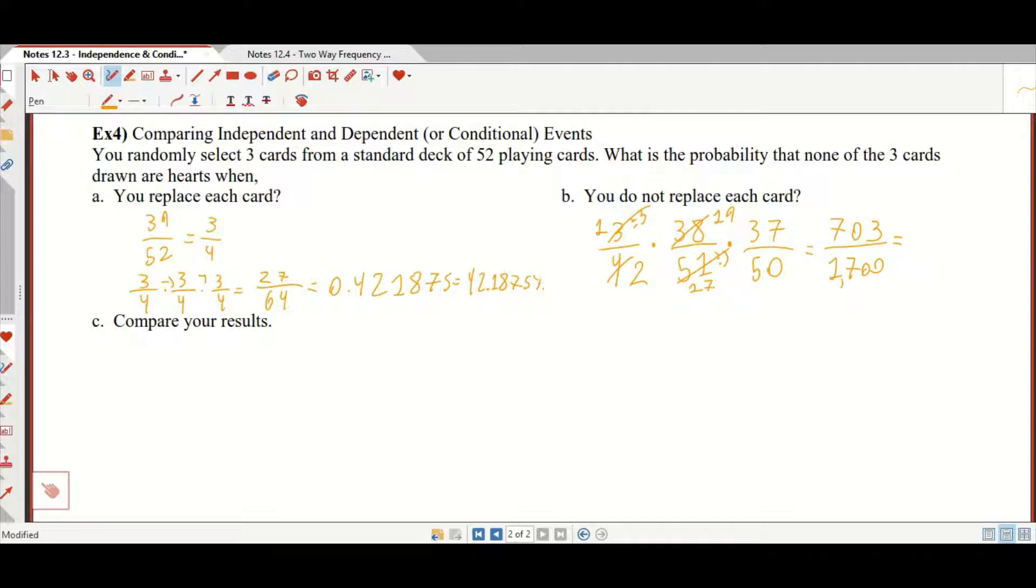Which as a decimal is disgusting, about 0.4135, which is about 41.35%. So compare your results. You are very slightly less likely to pull off the no hearts trick if you don't replace your cards.